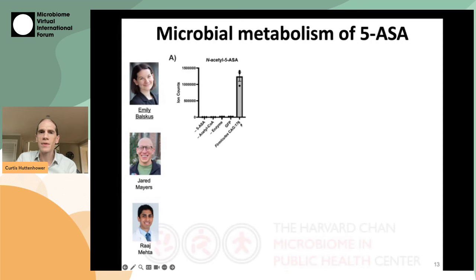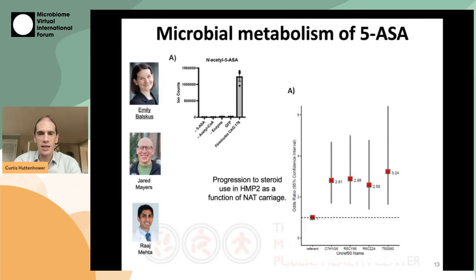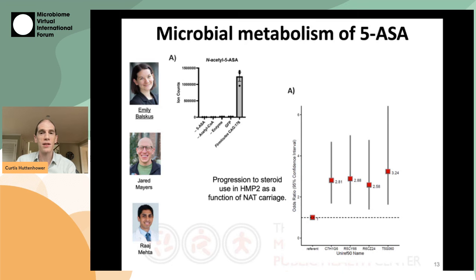What was really nice translationally about this story is that when Raj went back — either in the HMP2 or in an independent validation cohort — and asked whether these genes matter clinically, it turned out that carriage of any of these genes, and in a dose-dependent way, carriage of multiple of these genes does actually increase the relative risk of progression from 5-ASA use to steroid use.